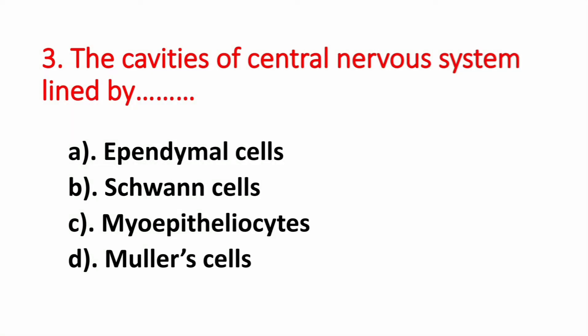Question number 3. The cavities of the central nervous system are lined by? Option A: Ependymal cells. Option B: Schwann cells. Option C: Myoepitheliocytes. Option D: Muller cells. The answer is Option A, Ependymal cells.